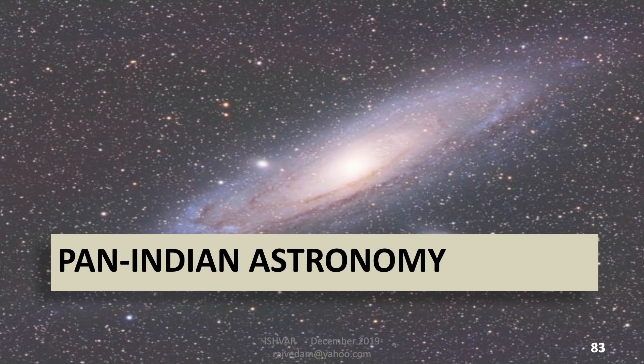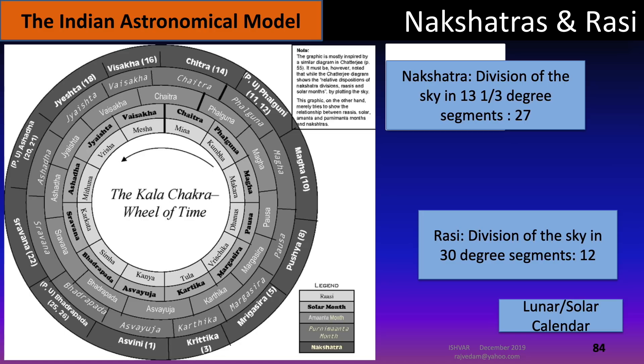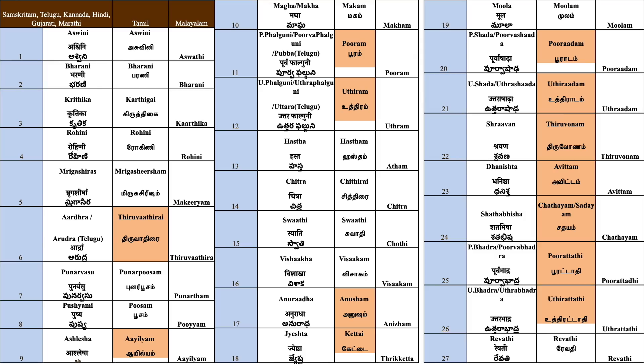We will very quickly go over something called Pan-Indian astronomy. My intention is to show that there is no distinction between Northern India and Southern India. If you look at the astronomical model, I won't talk in great detail about the Nakshatra-Rashi model. What I wanted to show you was the names of the Nakshatras in Northern India and in Southern India.